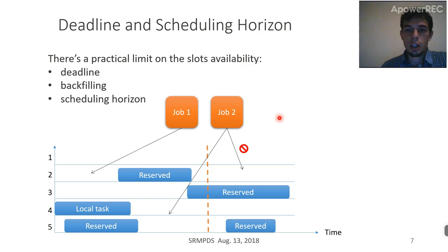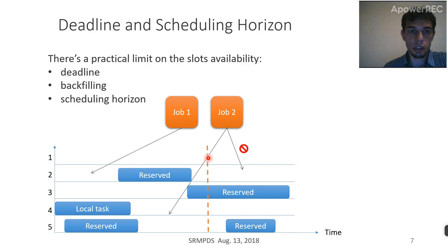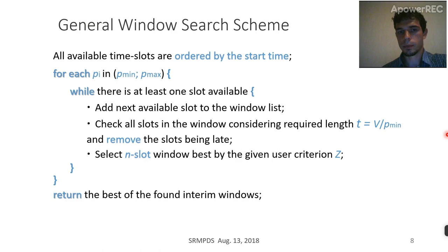Another limitation we should talk about is that usually every job flow scheduling problem has time limitations. It could be some deadline for job execution, it may be some functionality restriction in the backfilling operation, or it could be a scheduling horizon — the interval during which we have reliable information about the node schedule and utilization.